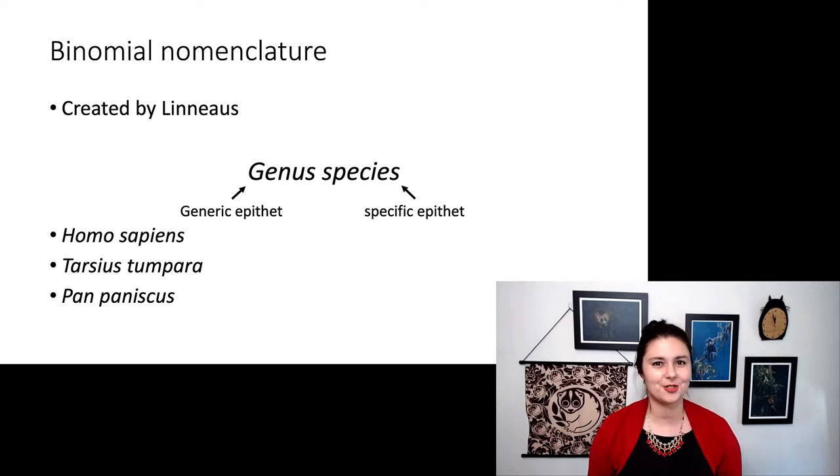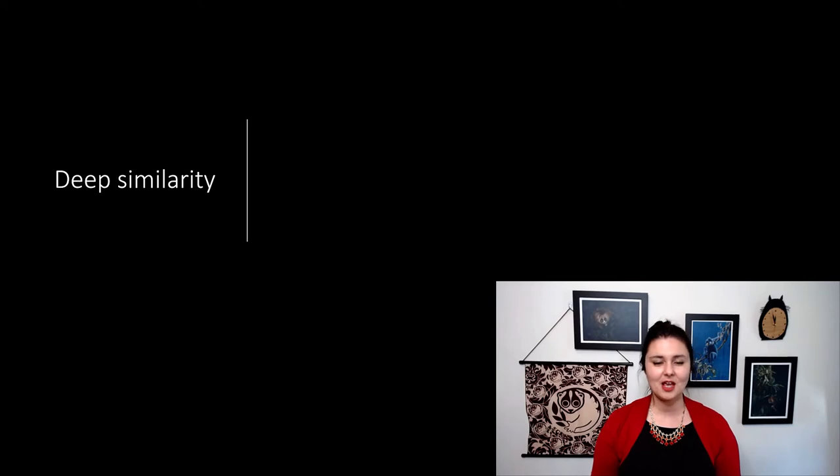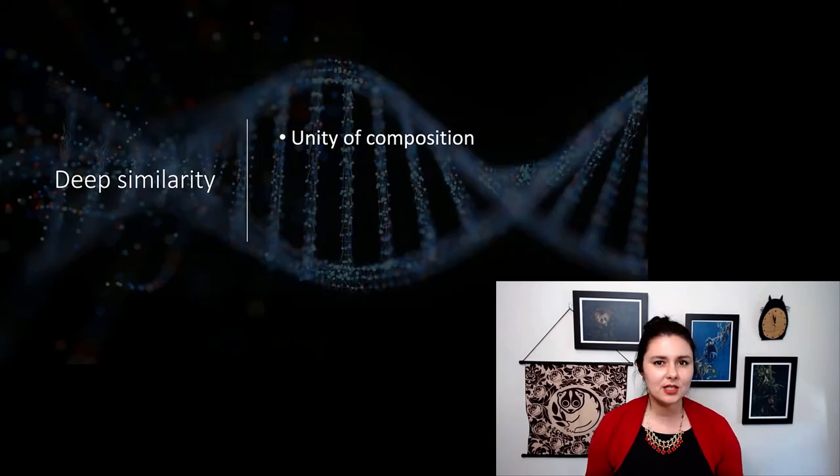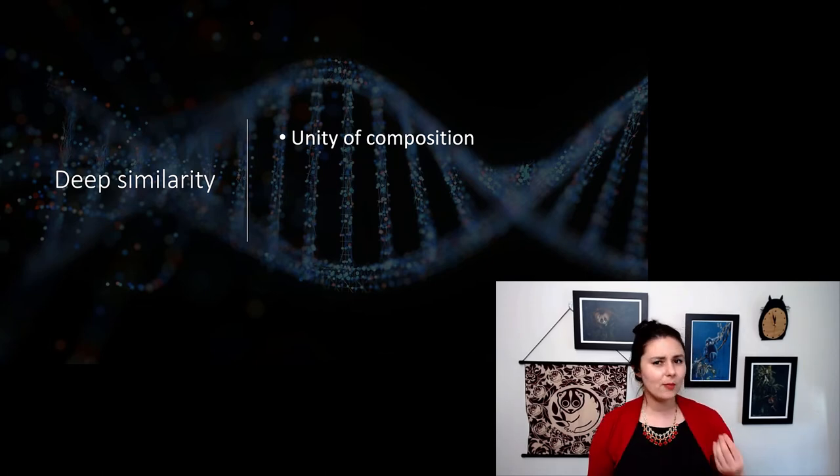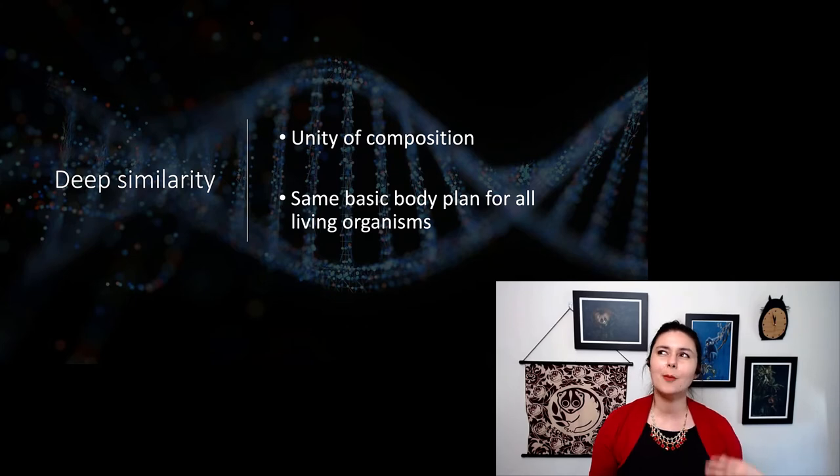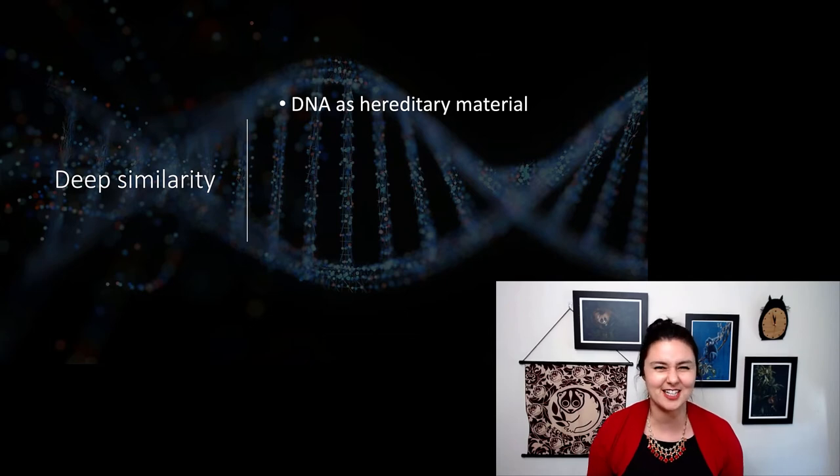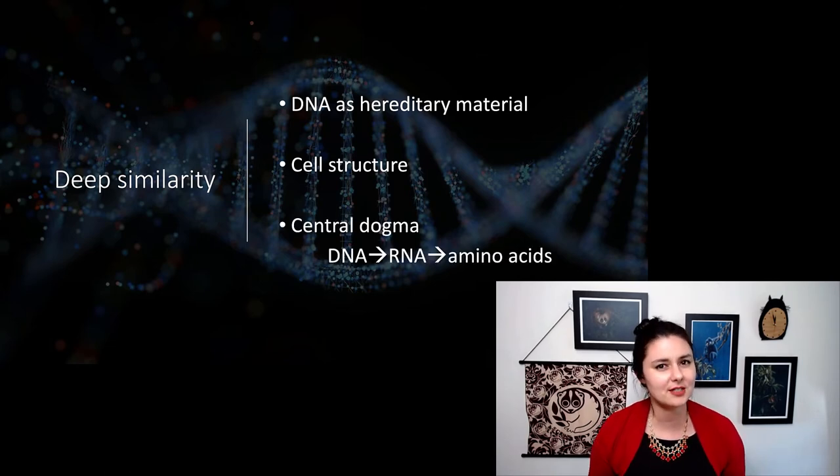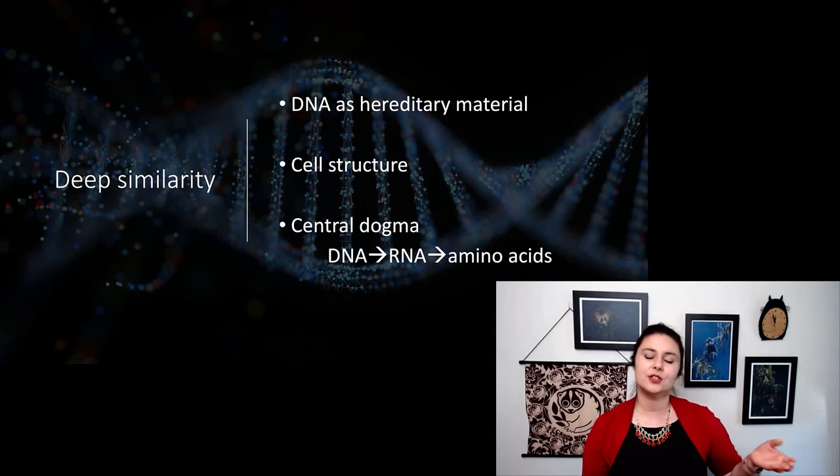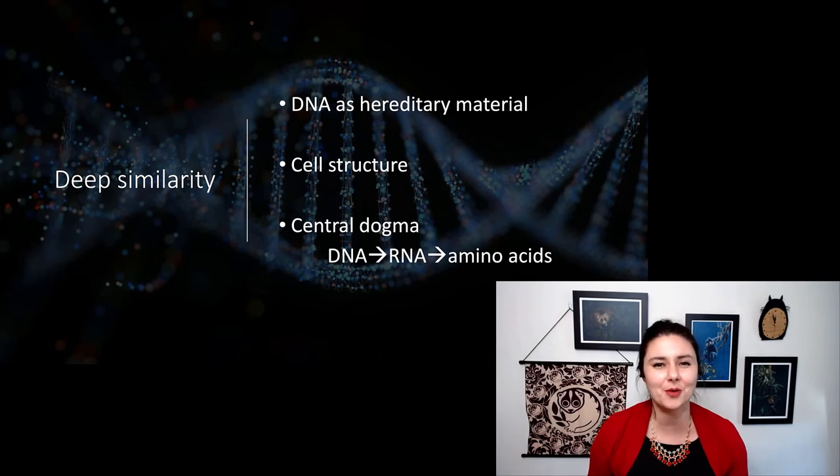So now that we've talked a little bit about what evolutionary biology is and gotten ourselves reacquainted with classification, let's tackle this idea of deep similarity. Deep similarity is this idea that there's a unity of composition between all living things. That if you go back far enough, there are a basic body plan or some similarities between all living creatures. When we're talking about all life, literally everything, this means DNA as our hereditary material. Every living cell uses DNA for our hereditary material. Also, cellular structure. Every living creature uses cells. And also the central dogma of molecular biology. We have DNA. We transform that into RNA and we make it into amino acids. This is the central procedure that all living creatures use.